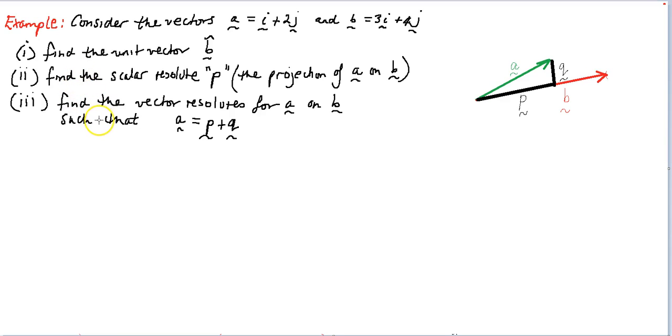Okay students, so we're going to put it all together now. We're going to work out the vector resolutes for two vectors, A and B. So A is equal to I plus 2J and B is equal to 3I plus 4J. We're going to work out the vector resolutes for A on the vector B, but we're going to do it in several parts.